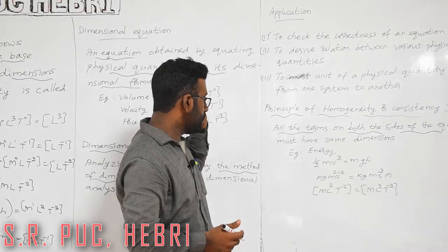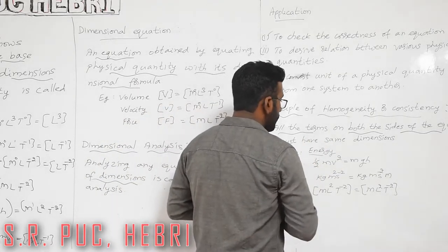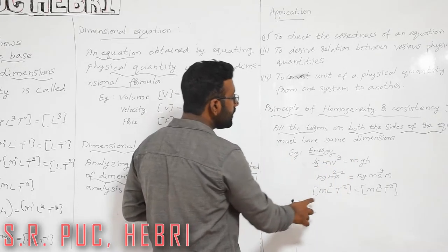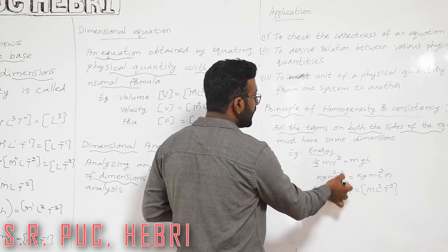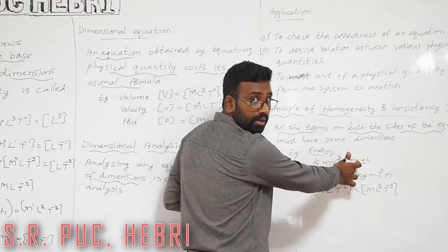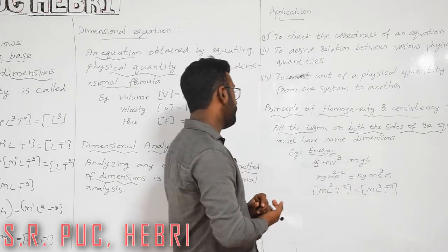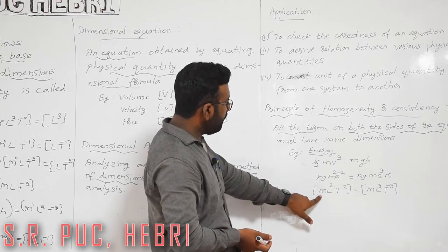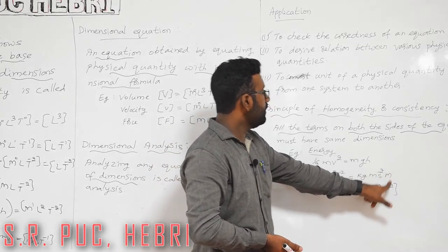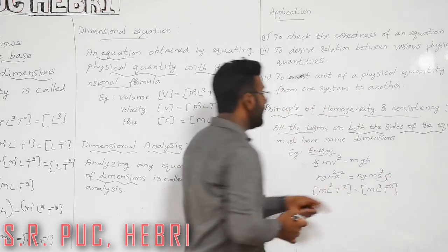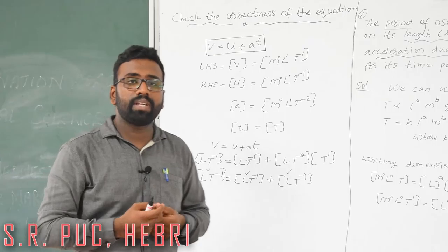Let us check this using energy: if ½mv² = mgh, both sides must have the same dimensions. For ½mv²: that is kg·m²·s⁻², giving M L² T⁻². For mgh: m (mass) × g (L T⁻²) × h (L), which also gives M L² T⁻². Both sides match, confirming the equation is dimensionally correct.